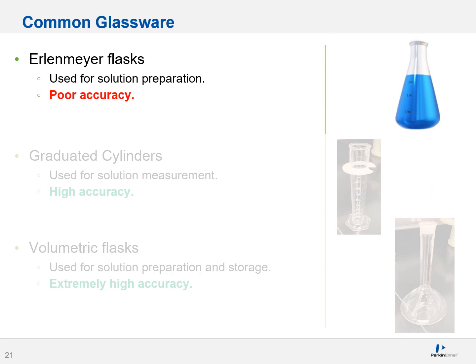Next, you have Erlenmeyer flasks, which are also used for solution preparation. I call them the big brother to a beaker — usually for solutions that need to be refluxed, have a habit of splashing around, or need to be swirled. But fancy as they look, they are not the most accurate; their accuracy should be considered similar to that of a beaker.